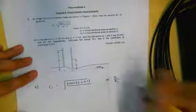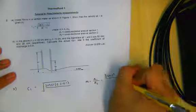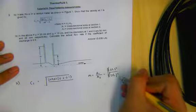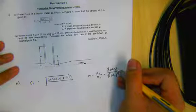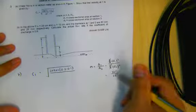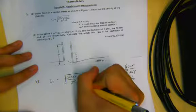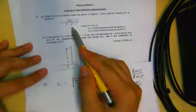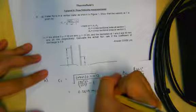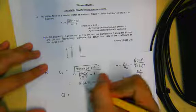M equals A1 over A2, given as pi over 4 D1 squared divided by pi over 4 D2 squared, which is D1 squared over D2 squared — so 50 squared over 25 squared. Squaring that whole result for M squared and subtracting 1 gives the velocity C1 as 0.3617 meters per second.